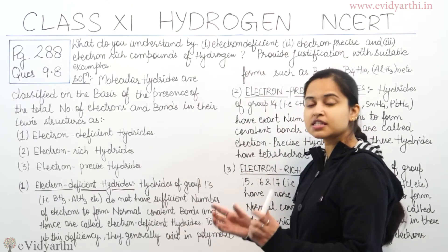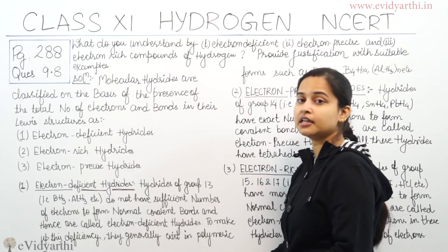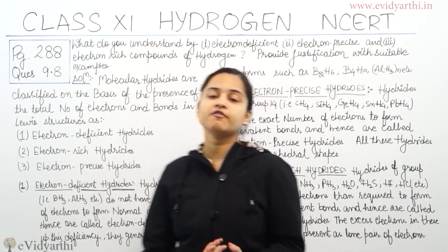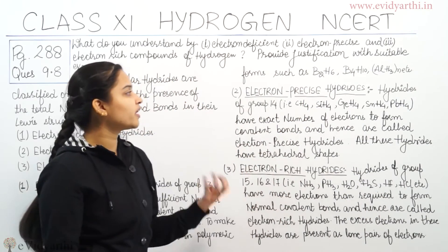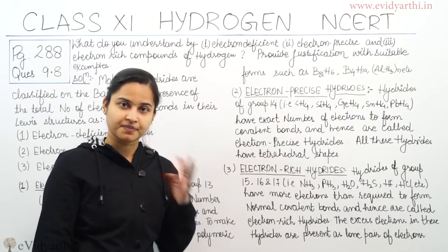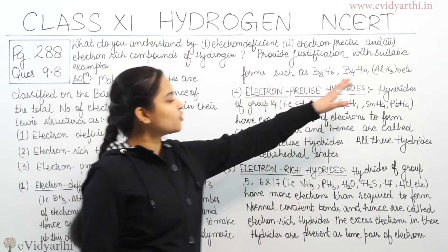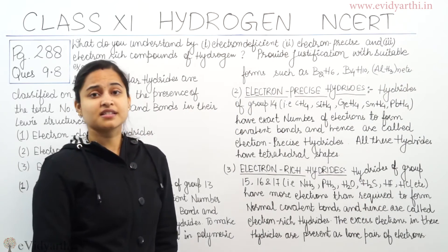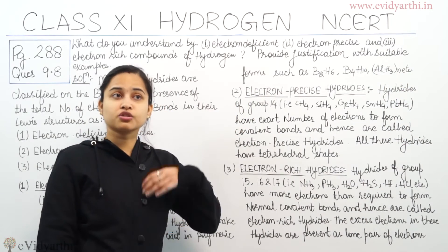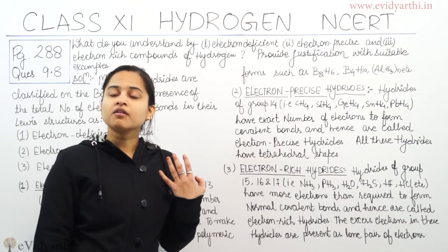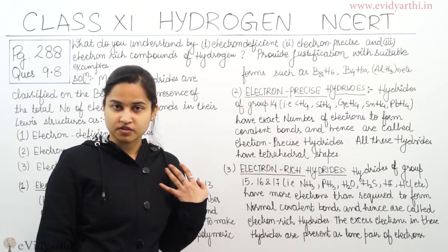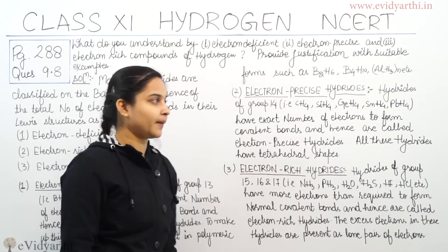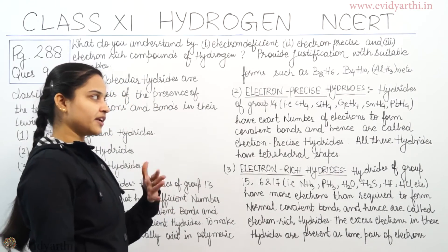To make up this deficiency, these hydrides generally exist in polymeric forms such as B2H6, B4H10, (AlH3)n, and so on. They exist in polymeric form precisely to compensate for the electron deficiency. Now let's come to electron precise hydrides.